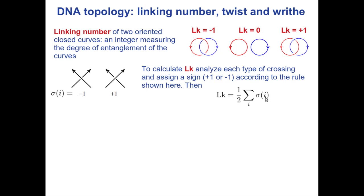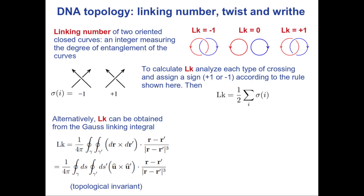The linking number is the sum over all the signs of the crossings divided by two. Here I have two crossings of type minus one, so I get a linking number equal to minus one: two times minus one divided by two equals minus one. Here I have no crossing, so the linking number is zero. This is the way I define this integer for any given two closed curves.